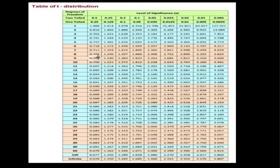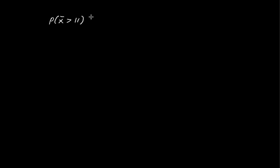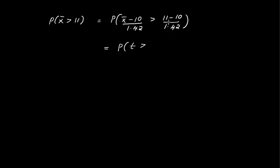From the t-table with 9 degrees of freedom, t equal to 0.703 corresponds to a one-tailed probability of 0.25. Similarly, the probability of X-bar greater than 11 equals P((X-bar minus 10)/1.42 > (11 minus 10)/1.42) equals P(t > plus 0.703), which is also 0.25. Both required probabilities equal 0.25.